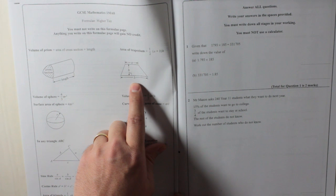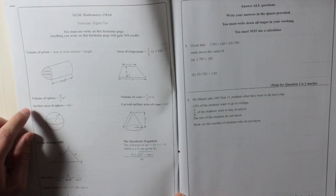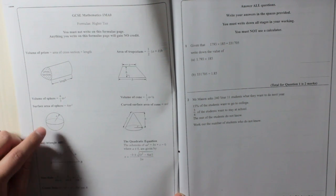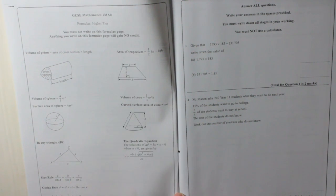Area of a trapezium. They tell you that. You should know that anyway, but they still tell you and you will need it later on. Volume of a sphere and surface area of a sphere. Curved surface area of a cone and volume of a cone.